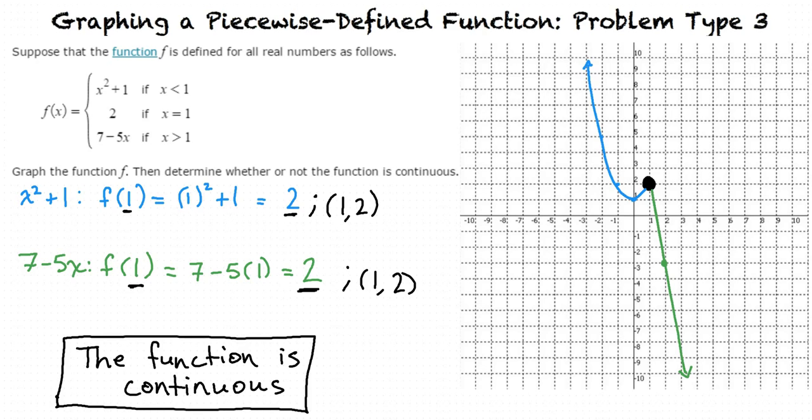So to graph a piecewise defined function that has a mixture of a quadratic and a linear expression, I start by graphing the first part of the function and following the domain, then I graph the next part following the next domain, and then I graph the last part following that part's domain.